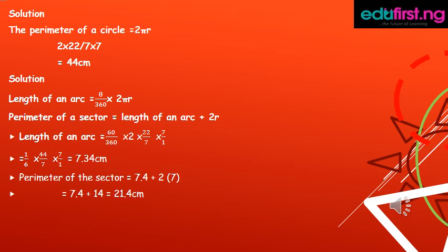Length of an arc equals 60/360 × 2 × 22/7 × 7, that is the radius. Equal to 1/6 × 2 × 22, 44/7 × 7 equals 7.34 cm.